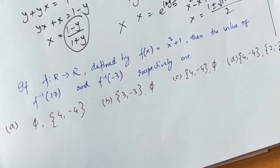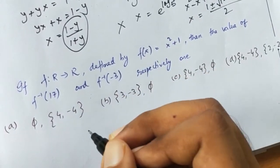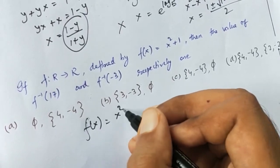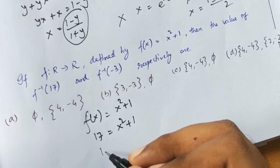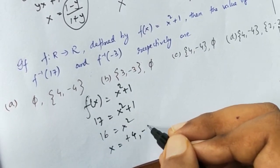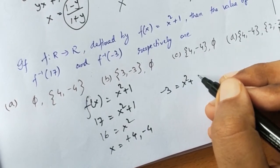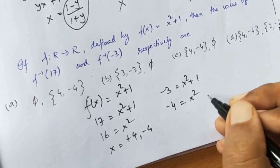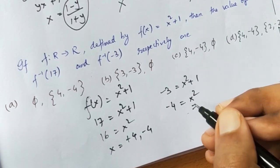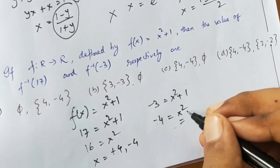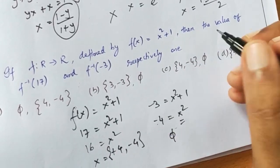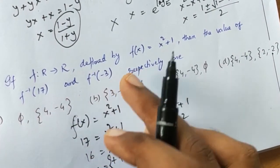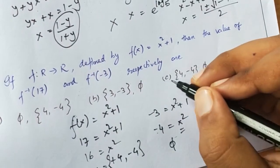For today's third problem, the function is defined as f(x) = x squared plus 1, and we have to find the inverse of the function for 17 and for minus 3. For f⁻¹(17): 17 minus 1 equals 16 equals x squared, giving x equal to plus 4 and minus 4. For f⁻¹(minus 3): minus 3 equals x squared plus 1, so x squared equals minus 4, which gives no real value — the result is an empty set. The answer is option C: {minus 4, plus 4} and empty set. Be careful with the order.